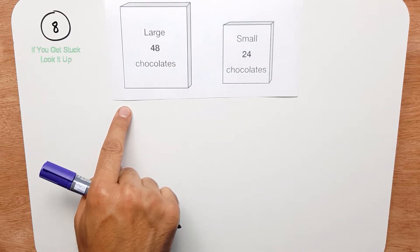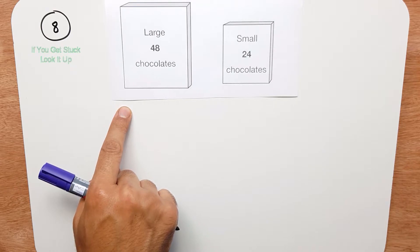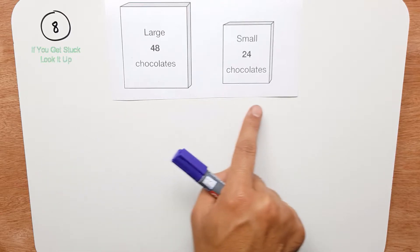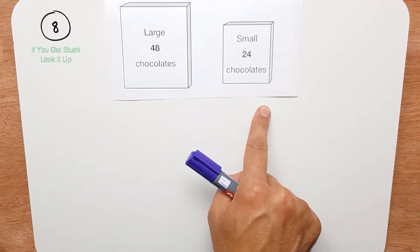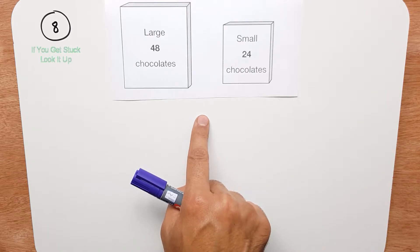Right, so there's two parts to this question. First of all, we need to find out how many chocolates are in 3 large boxes and how many chocolates are in 2 small boxes. Then we need to add them together to get the total.